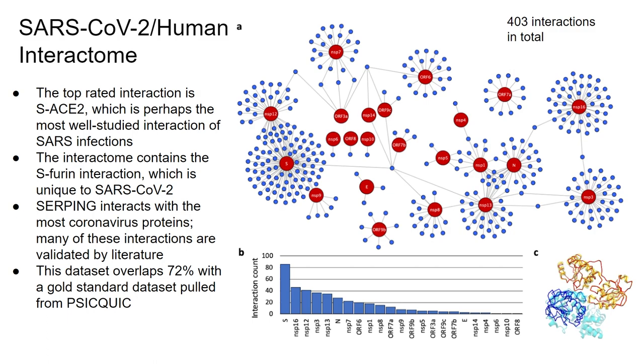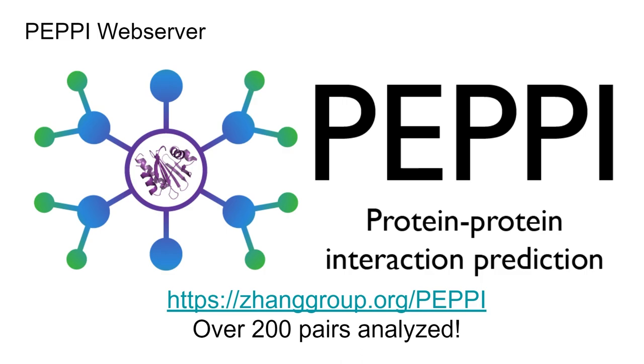Finally, we ensured this dataset overlapped significantly with a gold standard from PSICQUIC, the service we use for our sequence database. This pipeline is completely finished and ready for public use. At that URL you'll find a web server for running protein pairs and source code. We have over 200 pairs analyzed, and I can help you set up the source code.